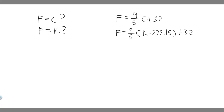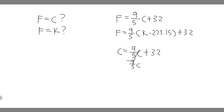For part A, I'm plugging in C for F. So: C = 9/5 · C + 32. What I'm going to do is subtract 9/5 · C from both sides. So minus 9/5 · C — this is going to become minus 4/5 · C, and it's going to be equal to 32.